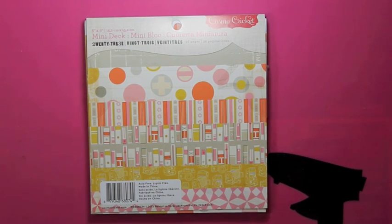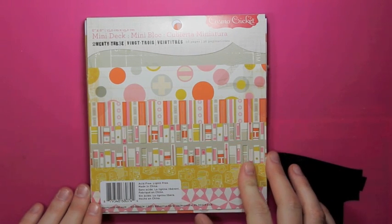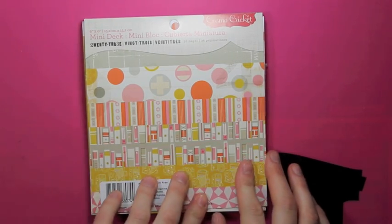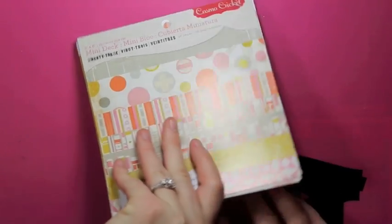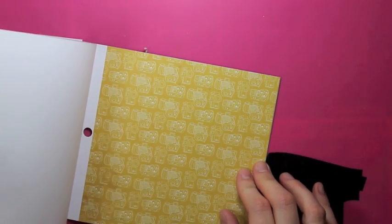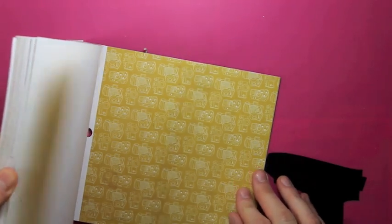The inspiration for that card came from this pattern paper. It's new from Cosmo Cricket. It's from their 23 collection, and this is their 6x6 pad. I just wanted to show you some of the really fun patterns that are included in this pad. One of the really neat designs is this vintage camera design on the mustard-colored paper.